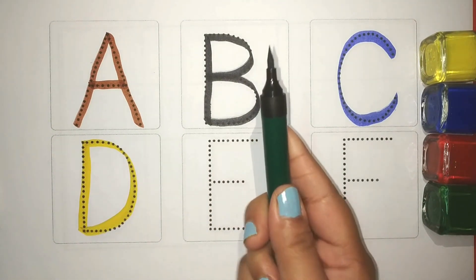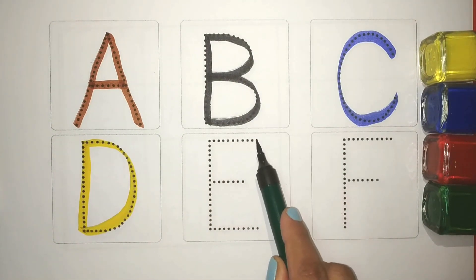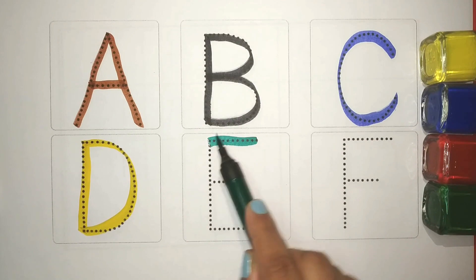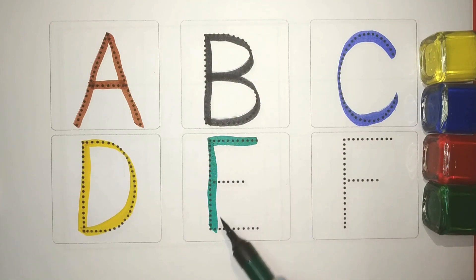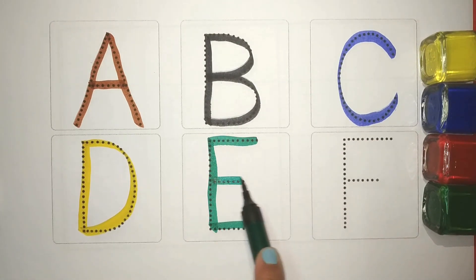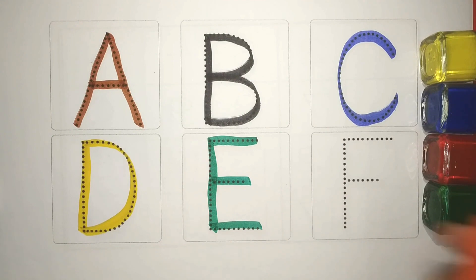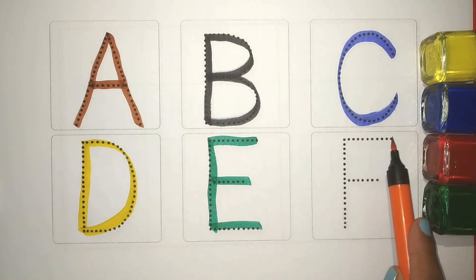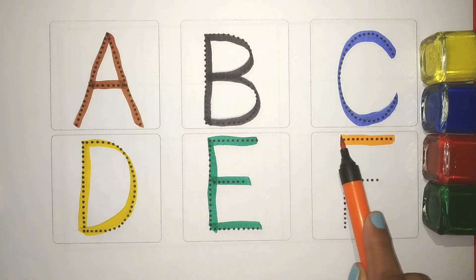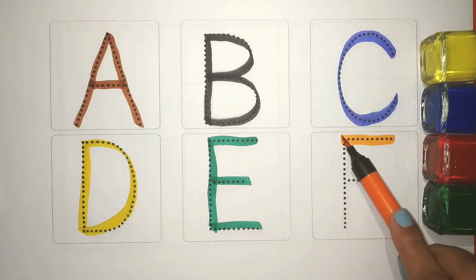Green — E. E for Egg. An orange — F. F for Frog.